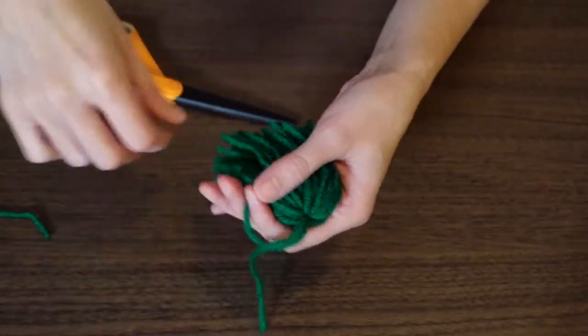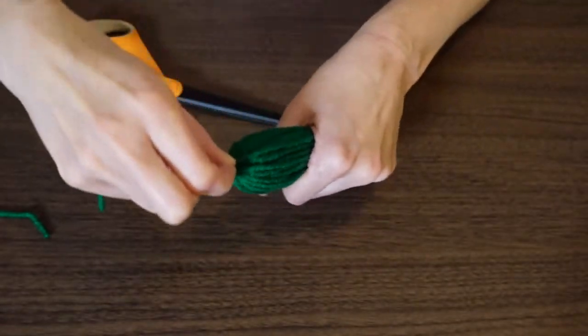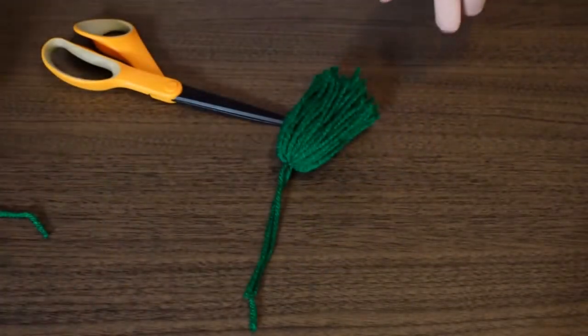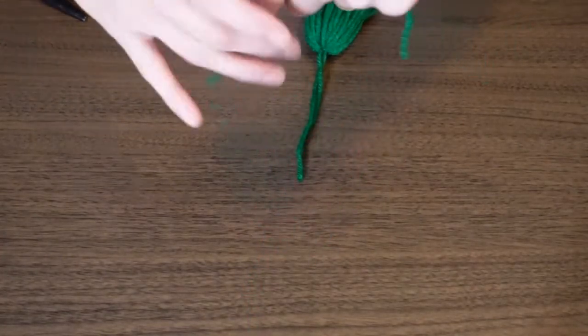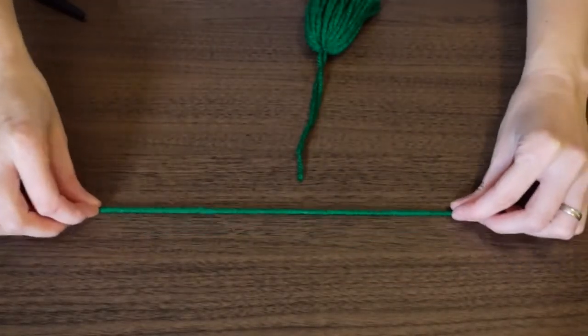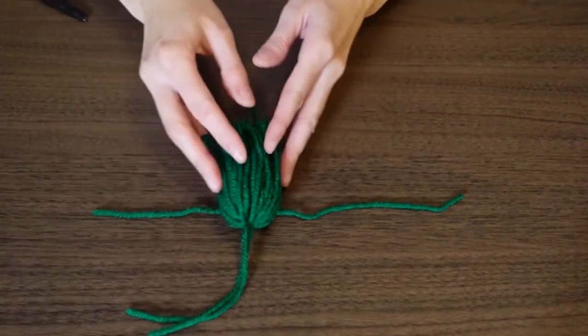So now I just take my hand and start to smooth that yarn down. And then I cut another long piece of that green yarn, about 10 inches long like before. I just lay it out here on the table, and then I take my little tassel bundle and then I just lay it right on top of that piece of yarn, right in the center.